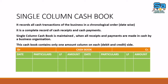All receipts and payments made in cash by a business will come into the single column cash book. Bank-related transactions will not appear in this cash book. A few examples of cash transactions include: cash received from a party, payment of insurance, purchase of furniture, goods sold for cash, and cash purchases.